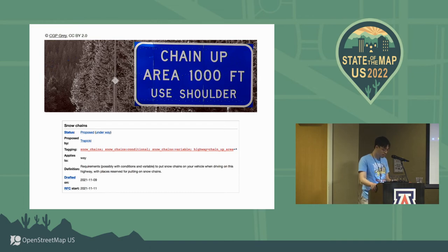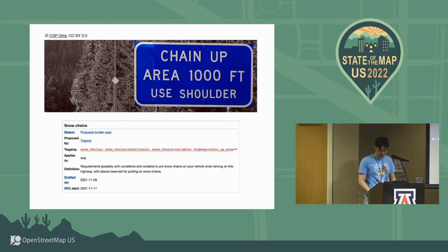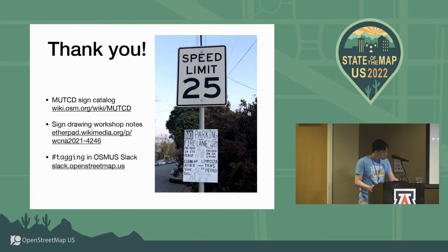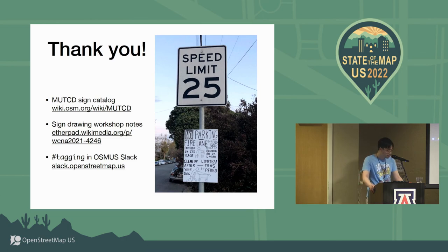We're building a pipeline of high-quality proposals that serves the needs of not only US mappers but also mappers in other regions, because we're introducing new concepts into OSM — like no-chain requirements — that mappers worldwide can take advantage of, and eventually data consumers too. You can check out the work-in-progress sign catalog on the wiki and use existing pages as a model for your efforts. Unfortunately, many of these pages are currently experiencing performance issues and coming up blank because of a bug in the wiki's configuration, so if you're technically minded maybe you can help with that — as a workaround you can keep retrying the URL until it loads. If you're interested in contributing graphics, please see the notes from a workshop I gave last fall at Wiki Conference North America. If you have any questions or want to coordinate efforts, please hop into OSM US Slack and say hi. We'd love to have you join the effort in cataloging the US standards. Thank you.